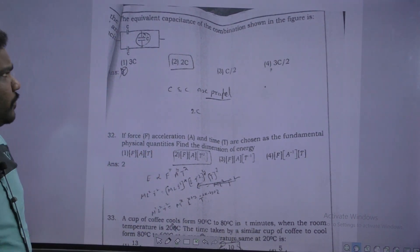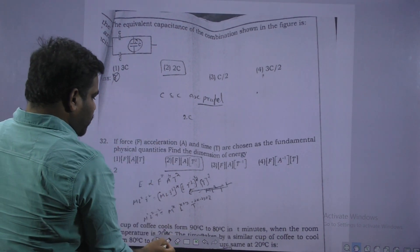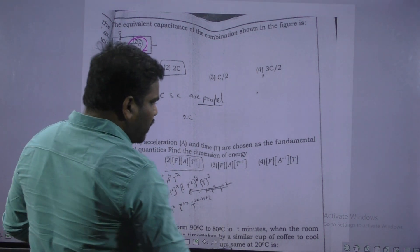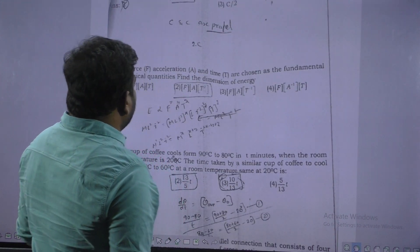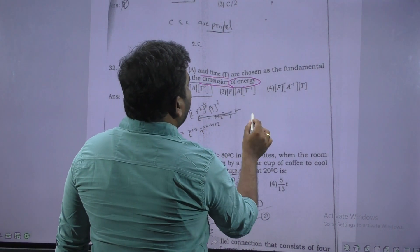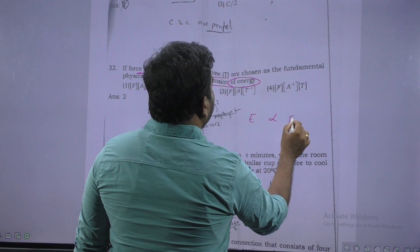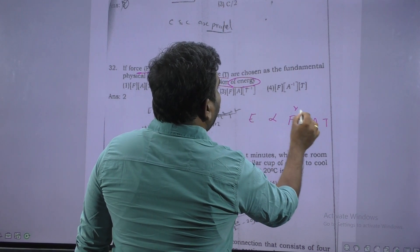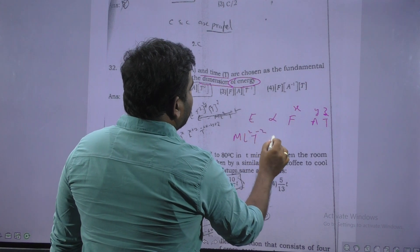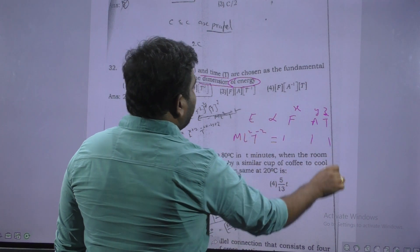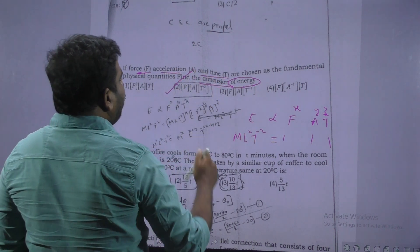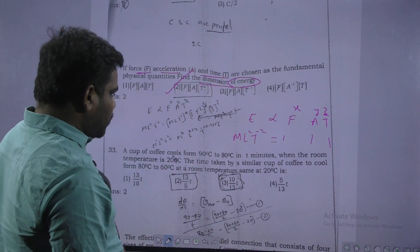Next. This is equivalent capacitance is asked. We know. This one is ineffective, this one is ineffective. Only two capacitors are working. That is, two are parallel. Next. Here is the force, acceleration and time. Find dimensional formula of energy. Energy proportional to force, acceleration, time, power x, power y, power z. So write down the dimensional formula of energy. ML square T power minus 2 is equal to F dimensional formula, A dimensional, T dimensional formula. We know dimensional method how to solve. Find out x, y, z and substitute there. We get finally second option. F, A, T power 2.